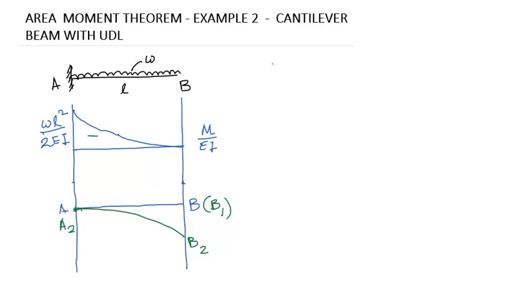The value is theta A equals to zero, as this is a fixed end. So according to our theory, theta A minus theta B equals to area of M by EI diagram between A and B.